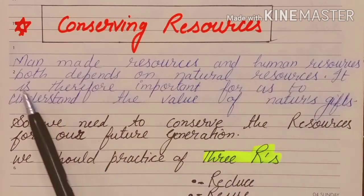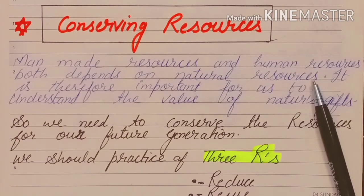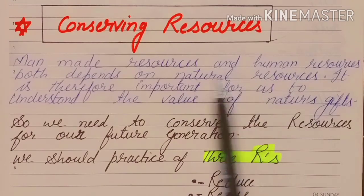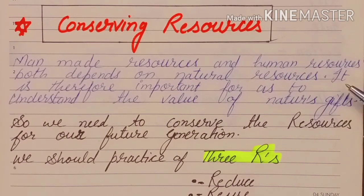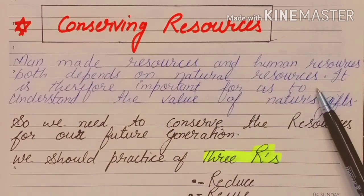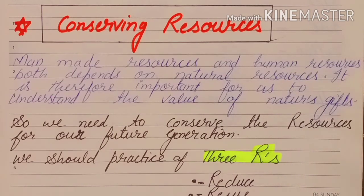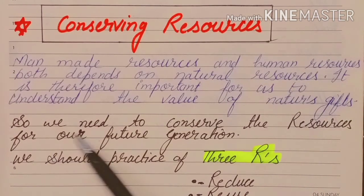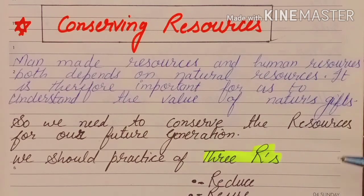Man-made resources and human resources both depend on natural resources. Natural resources, man-made resources, and human resources are the three categories. The substances used to make things like bridges, buildings, and roads all come from natural resources. It is therefore important to understand the value of nature's gifts and use them in a very judicial way. We need to conserve resources for our future generation and use more renewable resources.